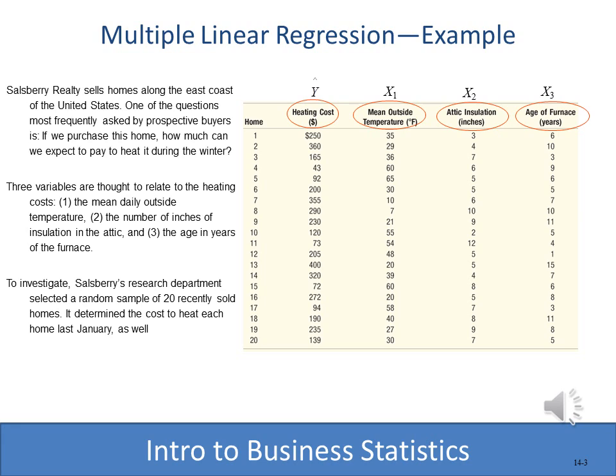The example we're going to work with, also in your textbook, is a realty firm. When people are interested in buying a house, they always ask the realtor how much it's going to cost to heat the house. The heating cost is the dependent variable. He's going to use three independent variables: the mean outside temperature, the amount of insulation in the attic, and the age of the furnace to predict heating cost.